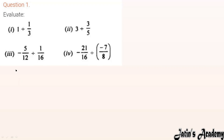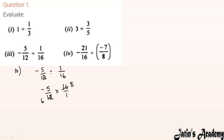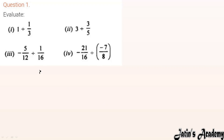We are having the third part. In the third part we are given minus 5/12 ÷ (1/16). The divide converts to multiply and the next term takes reciprocal, so it becomes 16/1. Cancel top and bottom: 2's table — 12 and 16 simplify. So the answer is minus 5 × 4 = minus 20, over 3 × 1 = 3. Answer: minus 20/3.